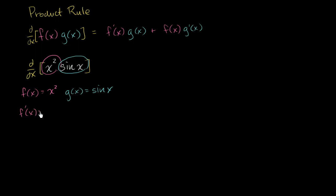The derivative of f of x is just going to be equal to 2x by the power rule. And the derivative of g of x is just the derivative of sine of x. We covered this when we talked about common derivatives. Derivative of sine of x is cosine of x. And so now we're ready to apply the product rule.